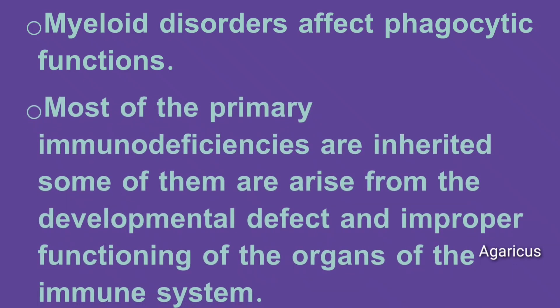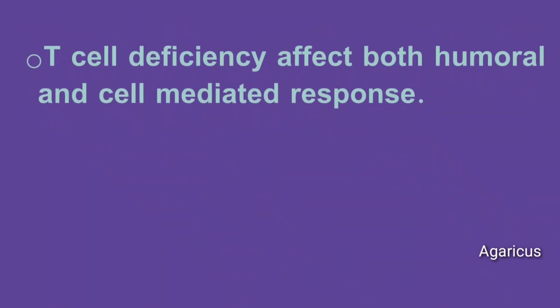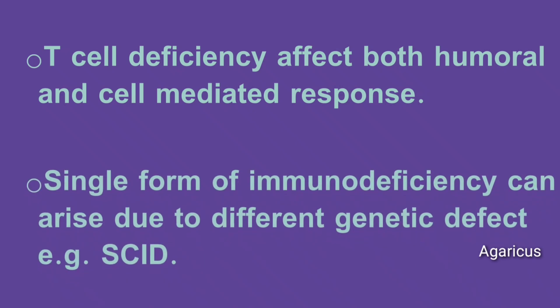Most primary immunodeficiencies are inherited; some arise from developmental defects and improper functioning of the organs of the immune system. T cell deficiency affects both humoral and cell-mediated responses. A single form of immunodeficiency can arise due to different genetic defects — for example, SCID.